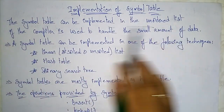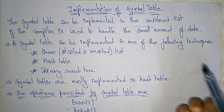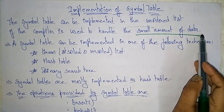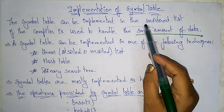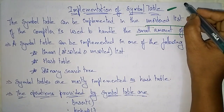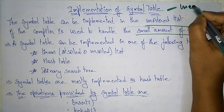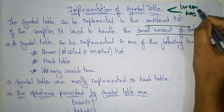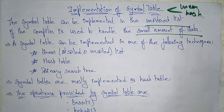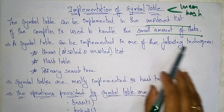The symbol table can be implemented in the unordered list if the compiler is used to handle a small amount of data. If the compiler is handling a small amount of data, it will be implemented in the unordered list format. The symbol table can be arranged in linear or by hash. The linear format is a linked list format, either as an ordered list or unordered list.